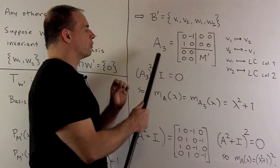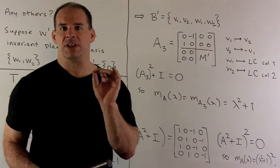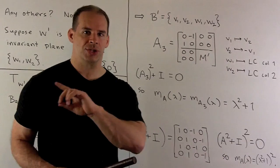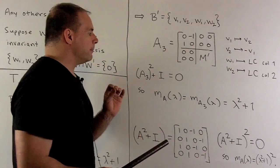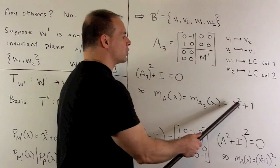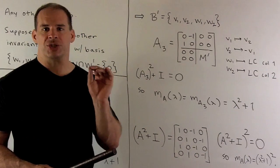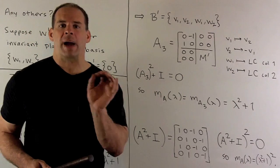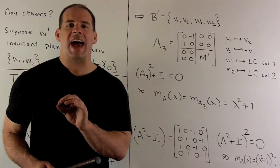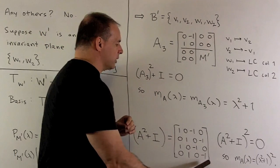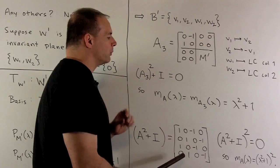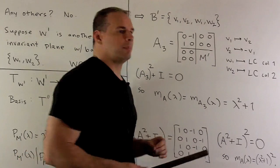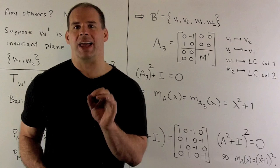Now, if we take A₃, square it, add the 4 by 4 identity, it's going to give us 0. That'll follow because if we take M′, square it, add the 2 by 2 identity, we get 0, which we just saw. That means the minimal polynomial of A₃ is equal to lambda squared plus 1. But, because A₃ and A are similar, the minimal polynomial of A is also going to be equal to lambda squared plus 1. Now, we go back to the actual matrix for A. We could square that, add the identity, and then we know we're getting something that's clearly not equal to 0. In fact, if we take this matrix and square it, we're going to get the 0 that we're looking for. So, that means the minimal polynomial of A is not equal to lambda squared plus 1, and that's our contradiction. So, our invariant plane is unique.